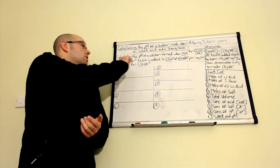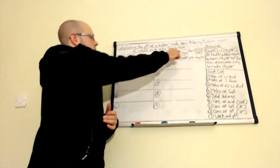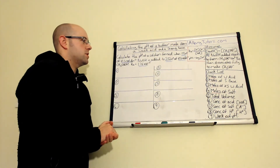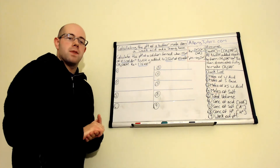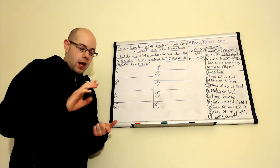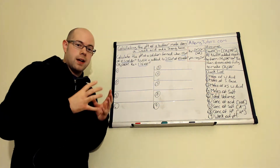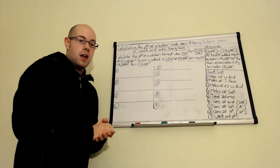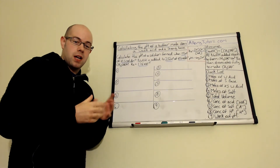The question says: calculate the pH of the solution formed when 15 cm³ of 0.1 mol dm⁻³ sodium hydroxide is added to 25 cm³ of 0.2 mol dm⁻³ ethanoic acid, with a given Ka value. We're making a buffer, and buffers always have to contain a weak acid and its salt. Because of that, we need to base this calculation around the Ka expression — that is crucial.